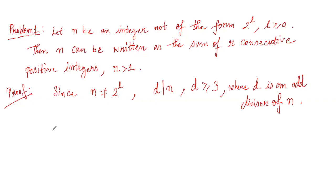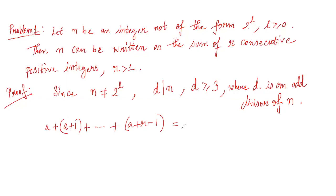Now I'm taking the sum of r consecutive integers. Suppose my first term is a, the second term will be a plus 1, up to a plus r minus 1. So these are the sum of r consecutive positive integers where a is also a positive integer. This sum comes out to be r over 2 times (2a plus r minus 1).